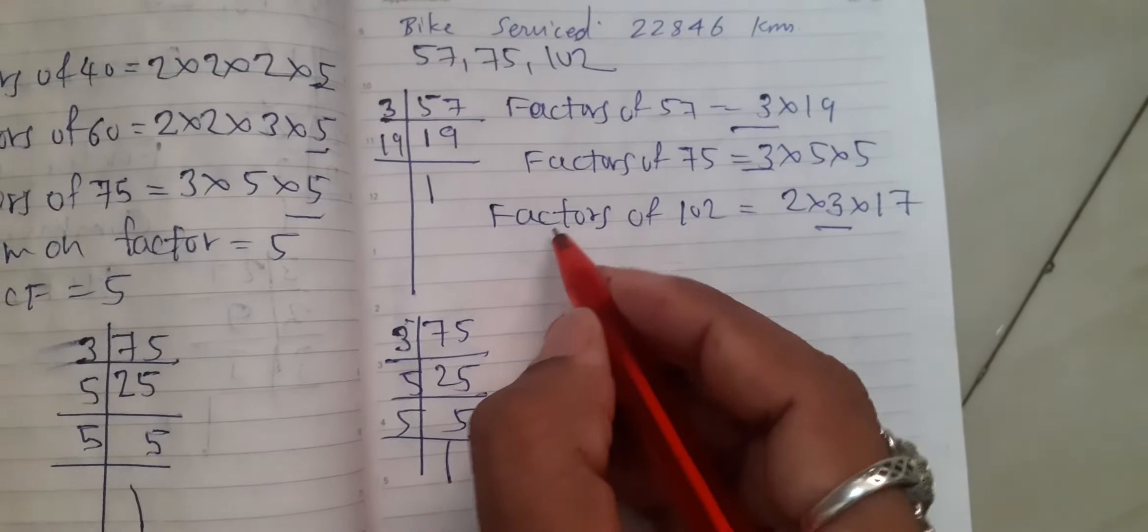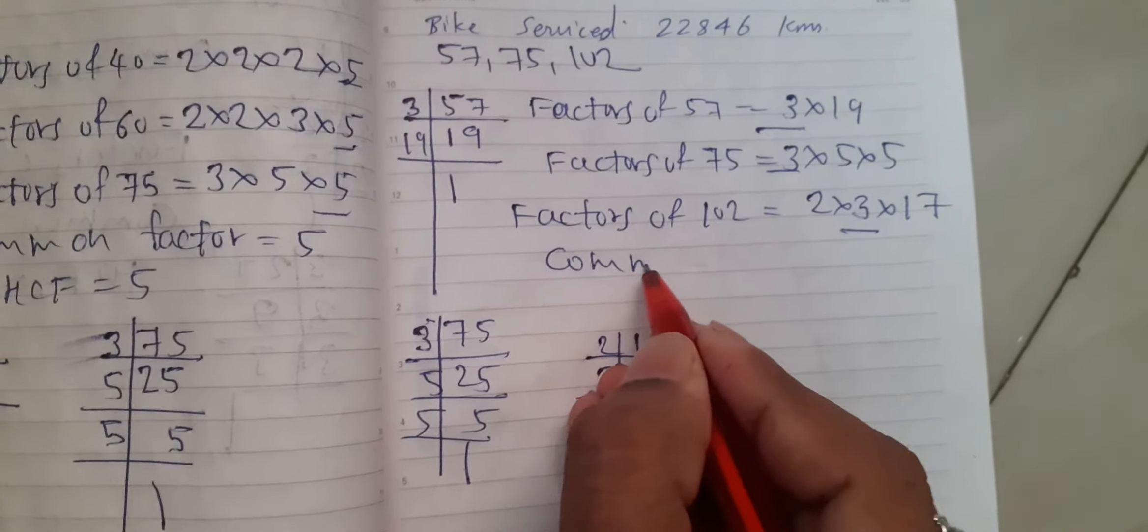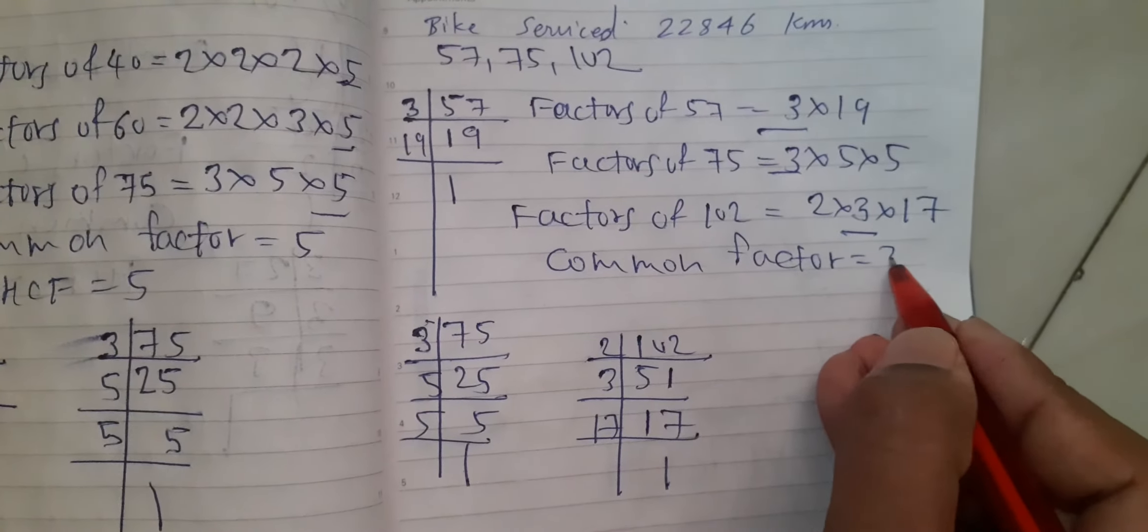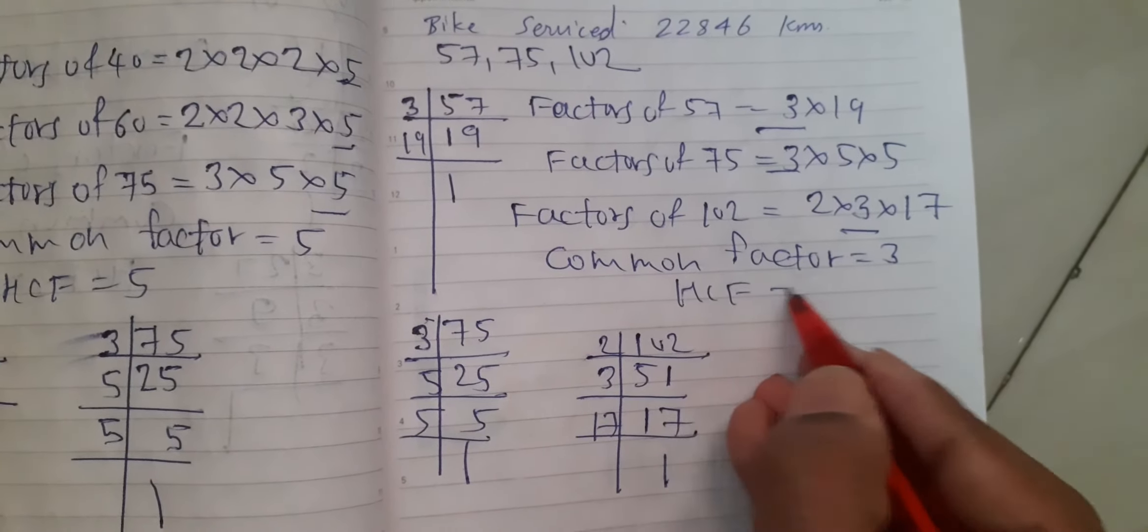3, 3, 3 is the common factor. HCF is equal to 3.